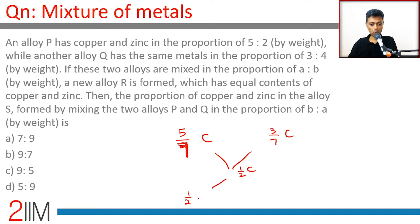In what ratio shall we mix? 1/2 minus 3/7 and 5/7 minus 1/2. This will be a:b using the allegation approach, doing the cross subtraction.